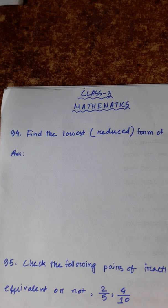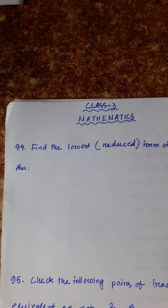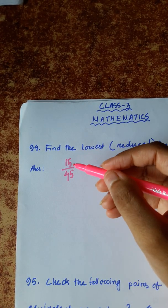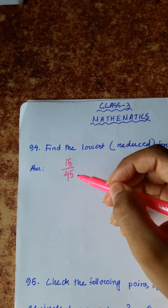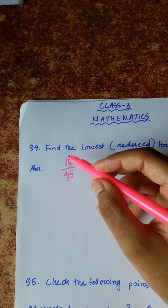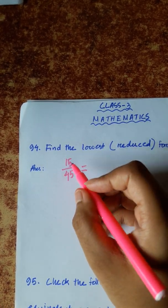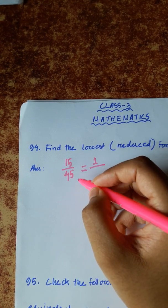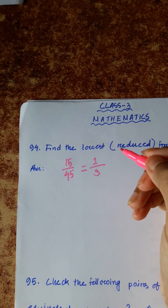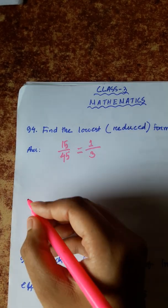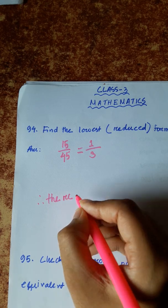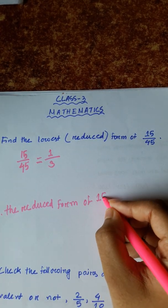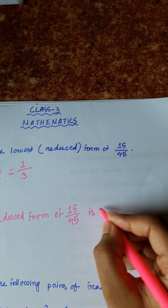Question 94: Find the lowest reduced form of 15/45. To reduce 15/45, we divide both numerator and denominator by 15. 15 divided by 15 equals 1, and 45 divided by 15 equals 3, because 15 threes are 45. So the reduced form of 15/45 is 1/3.